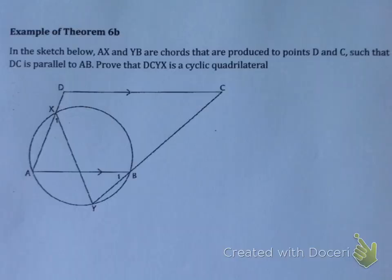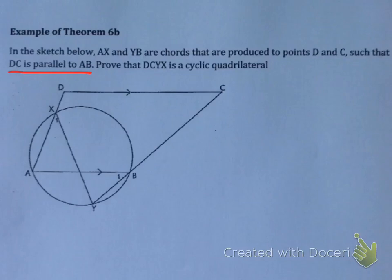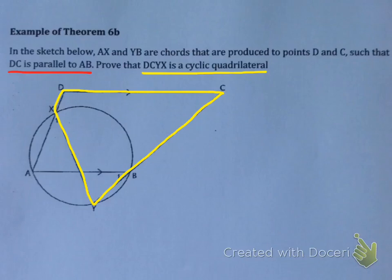Let's look at an example. In the sketch below, AX and YB are chords, which means A, X, Y, and B are all points on the circumference — so we're already given a cyclic quad AXYB. These chords are produced to D and C such that DC is parallel. That's important, because as soon as we have parallel lines, we should start thinking corresponding, alternate, and co-interior. We're trying to prove that DCYX is a cyclic quad. I don't see the butterfly angle shape, so theorem 4b is probably not the way to go. I either need to prove opposite angles add to 180, or that I have an exterior angle equal to an interior opposite angle.